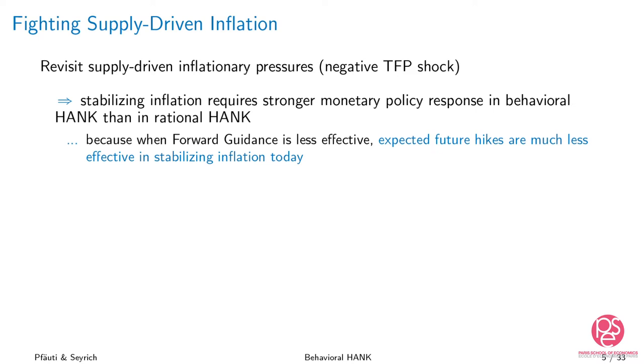In the rational model, forward guidance is extremely powerful: if monetary policy increases the interest rate a little bit and keeps it elevated for some time, those expected higher future interest rates are very powerful in bringing inflation down already today. But these channels are much less powerful in the behavioral model, so you have to do more right now. And because this applies in every period, you also have to act more persistently.